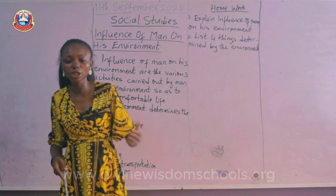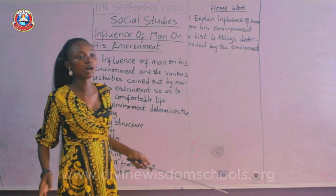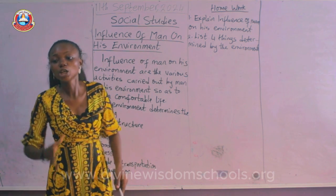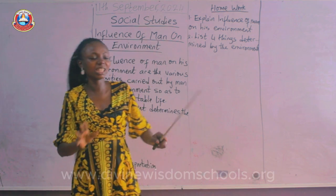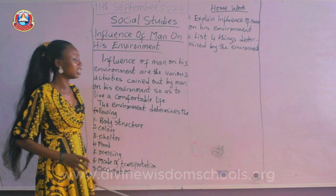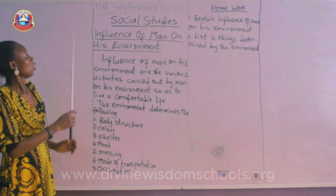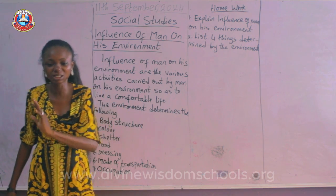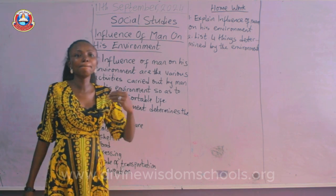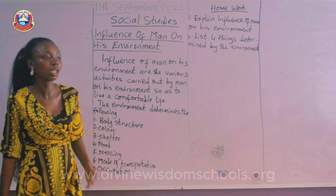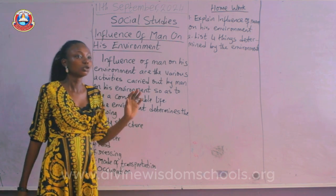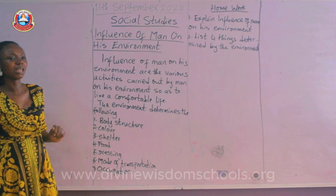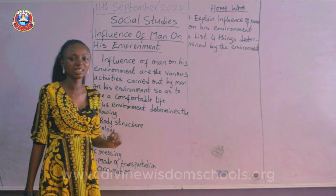In the same way, people in riverine areas go into canoe making and boat making, making use of what is in their environment for their benefit. So the influence of man on his environment refers to these different activities man carries out in his environment to make life comfortable for him.